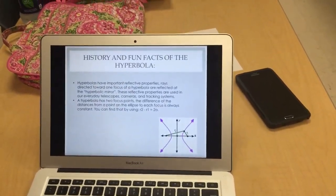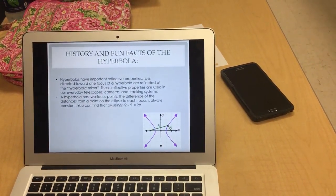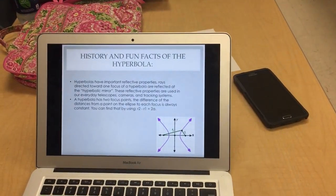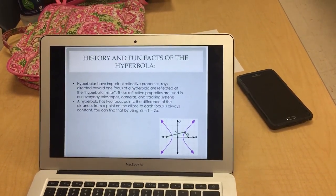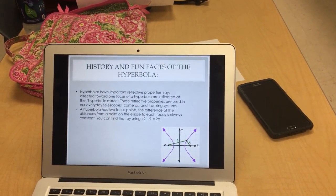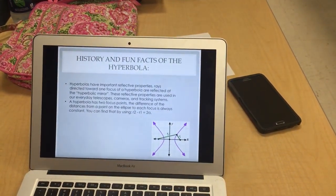The history and fun facts of a hyperbola. So hyperbolas have important reflective properties. Rays directed towards one focus of a hyperbola are reflected at the hyperbolic mirror. These reflective properties are used in our everyday telescopes, cameras, and tracking systems. So every camera we use has the hyperbola reflective.